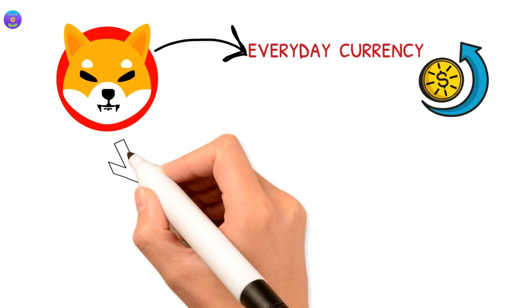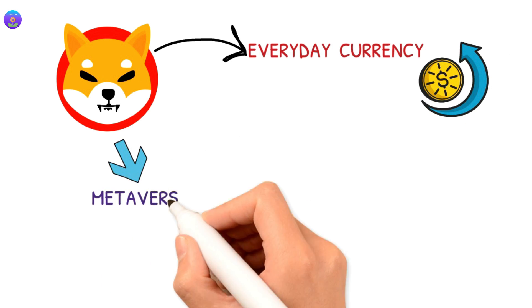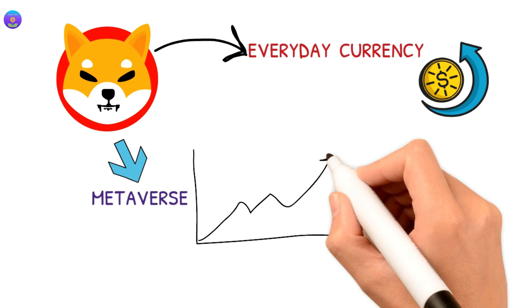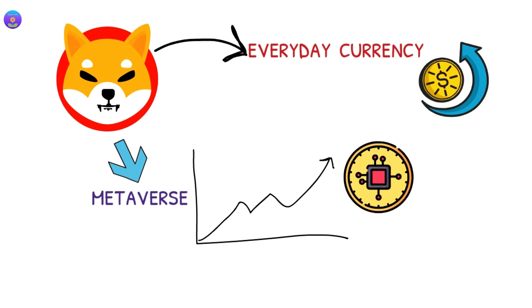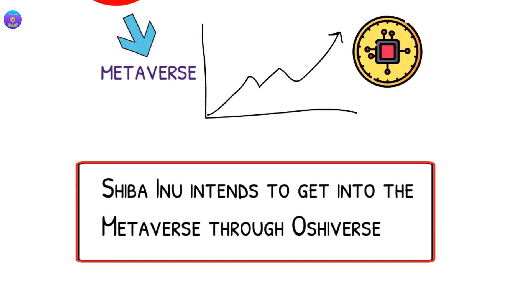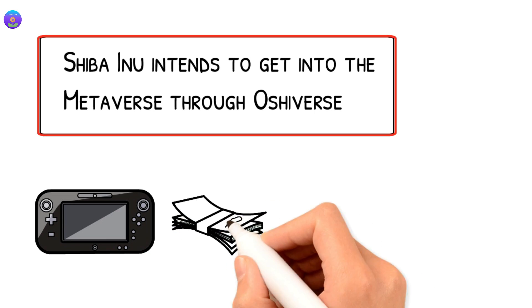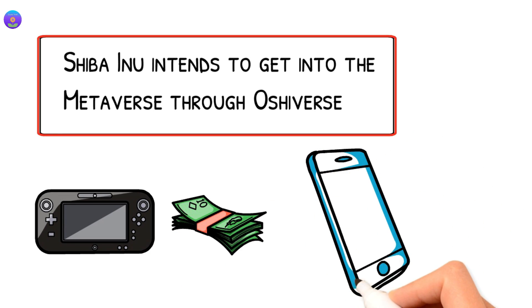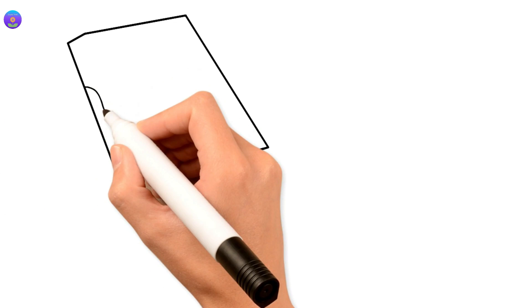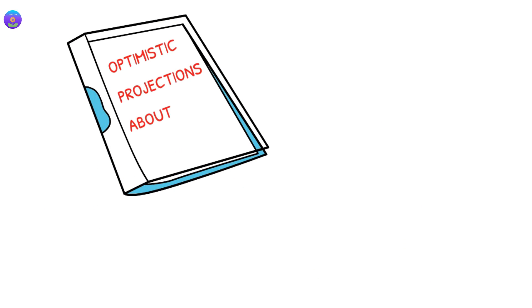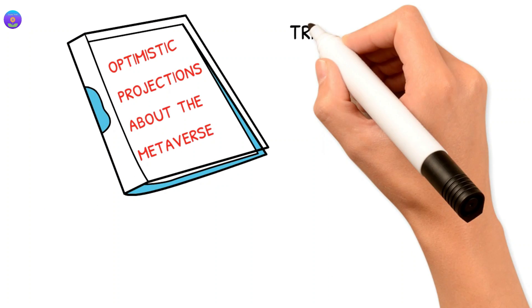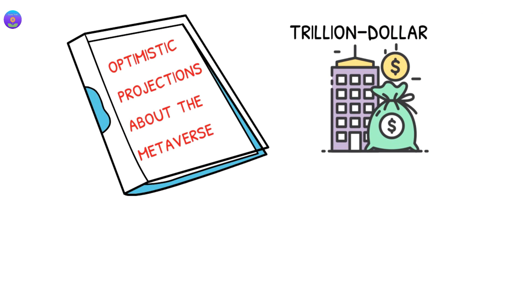The Shiba Inu team is also looking into the metaverse, which is one of the fastest-growing aspects of the cryptocurrency market. Shiba Inu intends to get into the metaverse through Oshiverse. This is a metaverse that will include a play-to-earn game that can be accessed on mobile platforms. Considering all the optimistic projections about the metaverse, including its potentially trillion dollar market, it could be a catalyst for Shiba Inu's growth in 2022 and for years to come.